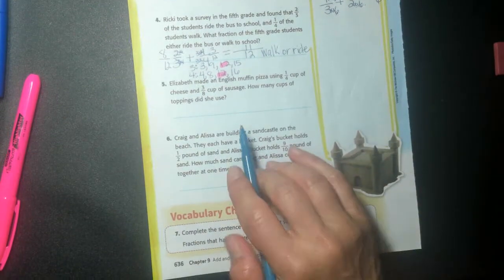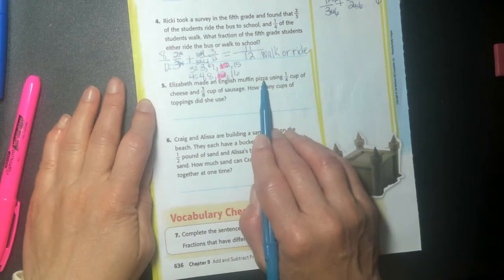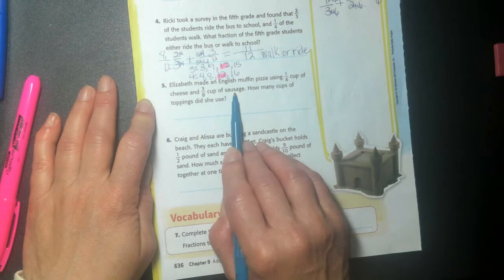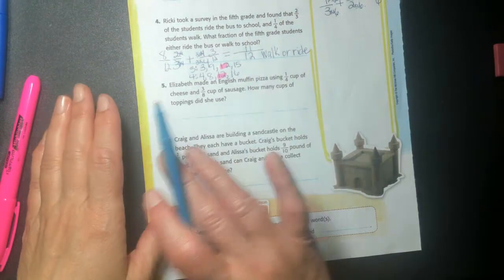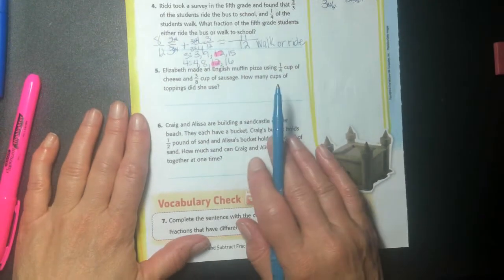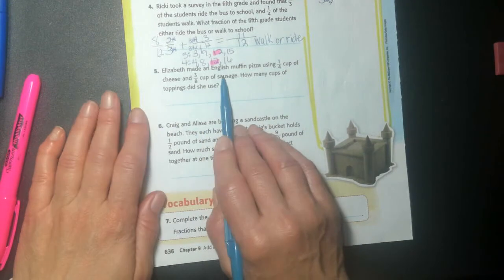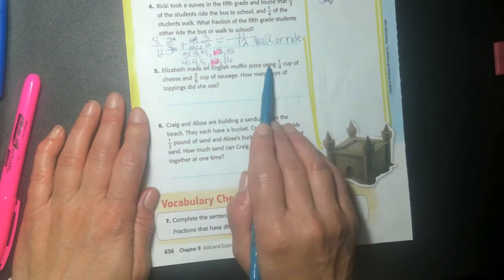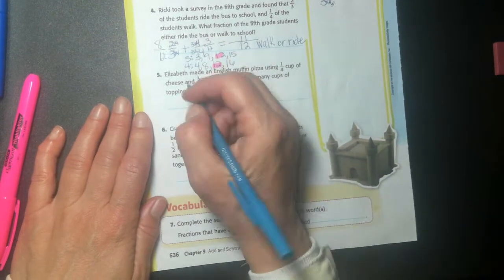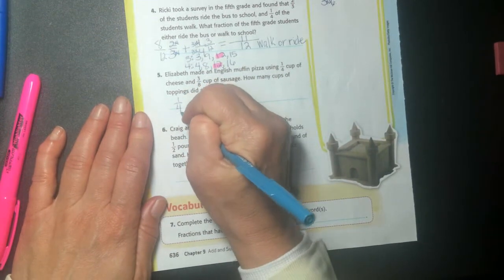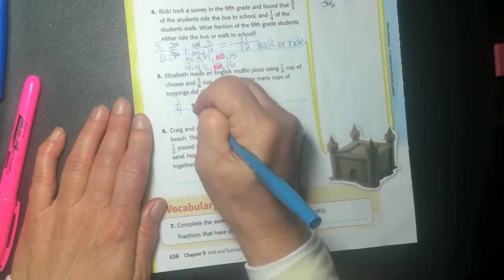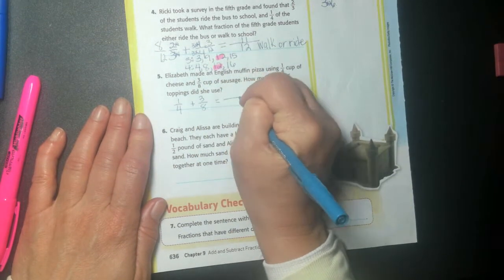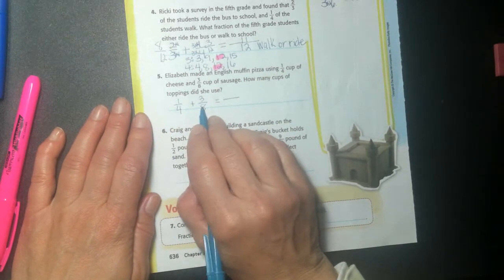Alright. So here's Elizabeth. She made an English muffin pizza using one fourth cup of cheese and three eighths cup of sausage. Right. Have you ever made one? You take your English muffin and you put sauce on it and then you put cheese on it and she put sausage on hers also. How many cups of toppings did she use? So she did her toppings were cheese and sausage. So she used one fourth of a cup of cheese plus three eighths of a cup of sausage is going to be equal to